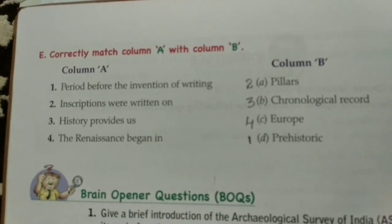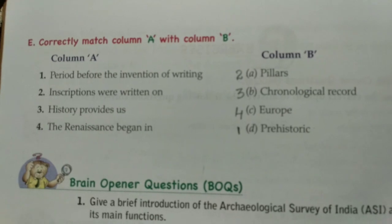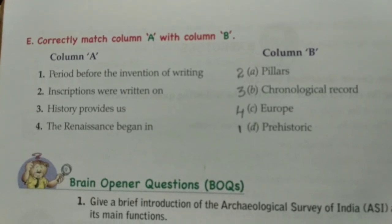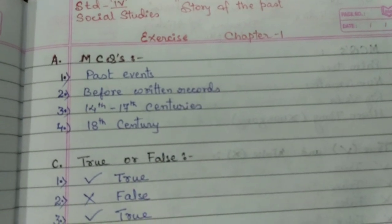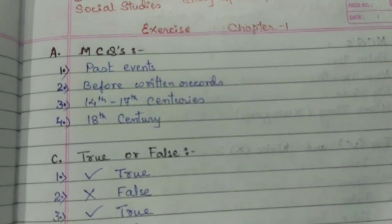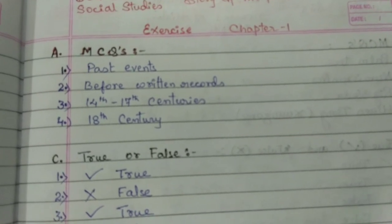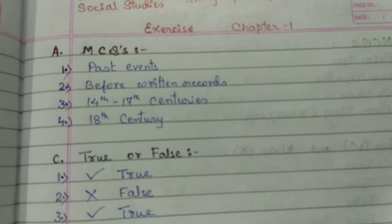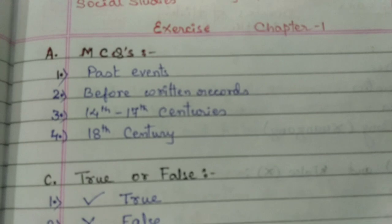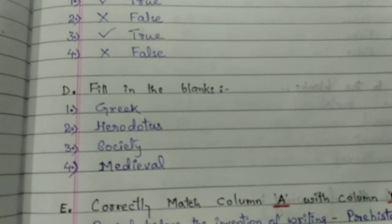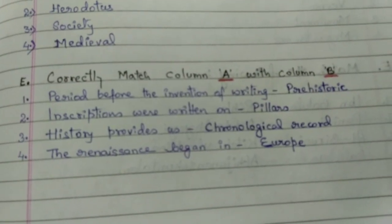Here we complete our objective type exercises. You can also have a look at the written answers on screen — if you missed something, the answers are written here for Chapter 1: MCQs, True and False, Fill in the Blanks, and Match the Following.